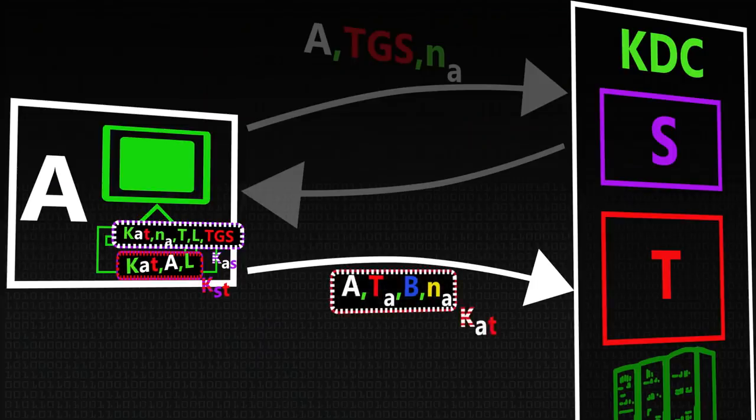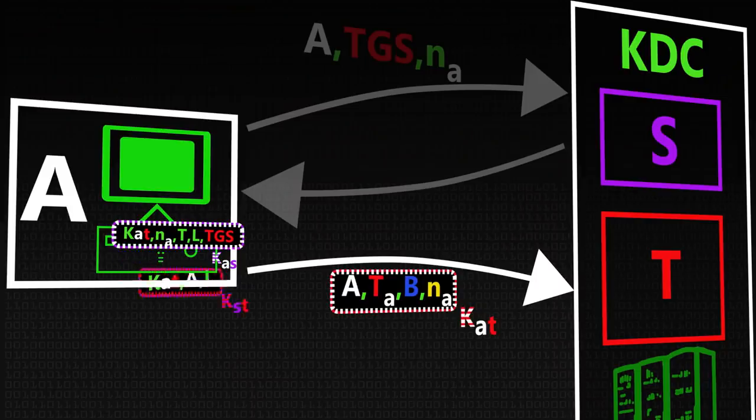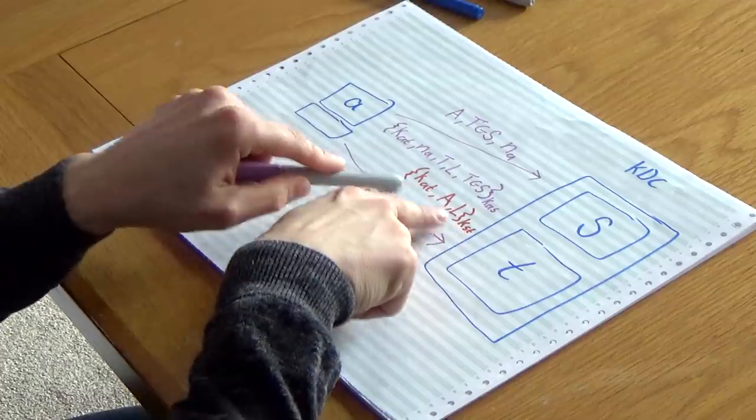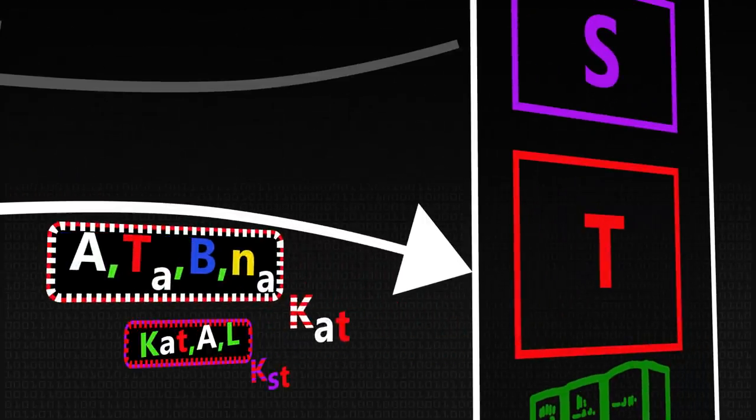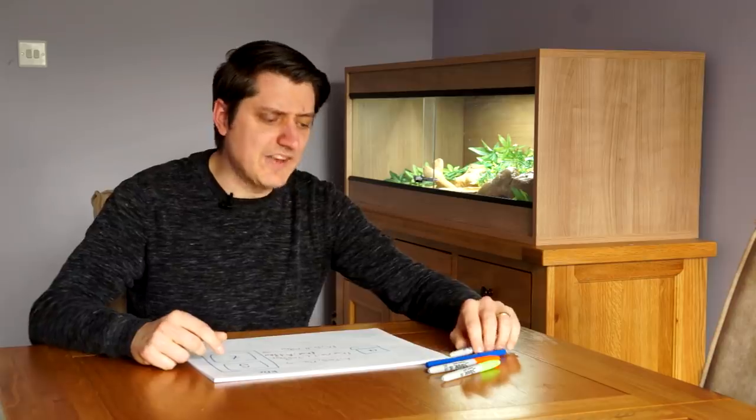And this is all going to be encrypted using the KAT session key we've just obtained. So KAT. So only me and T can read that. I have to take this and I also forward on the ticket. It decrypts a ticket and now it has access to KAT and can read my message. And no one else can. This is why Kerberos is so clever.